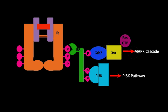Insulin receptor phosphorylates IRS-1 on its tyrosine residues. These phosphorylated tyrosine residues can serve as binding sites for other proteins: an adaptor protein, GRB2, and a lipid kinase, PI3K. A single receptor acting through IRS can trigger two or more signaling pathways.